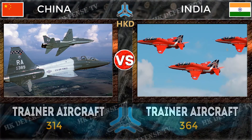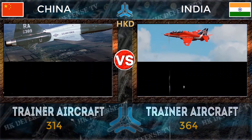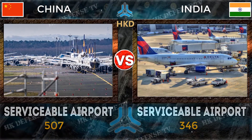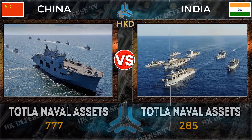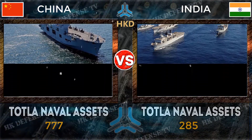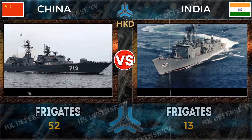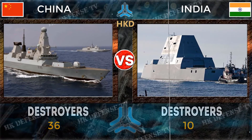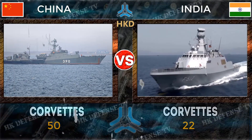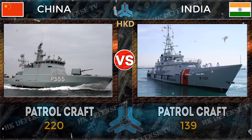Trainer aircraft: China 314 and India 364. Additional air assets — China 507 and India 346; China 777 and India 285; China 52 and India 30; China 36 and India 10; China 50 and India 22; China 220 and India 139.